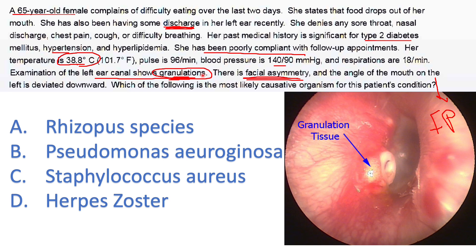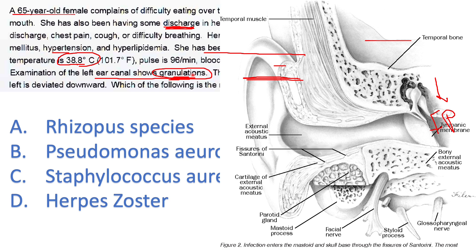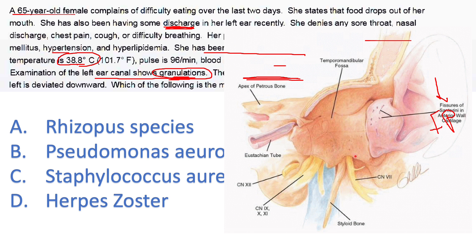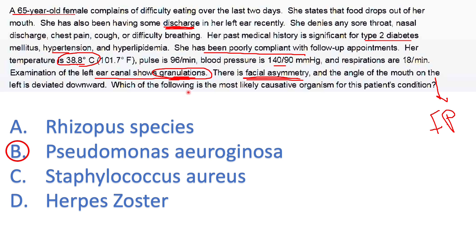Old, uncontrolled diabetics are susceptible to malignant otitis externa caused by Pseudomonas. The characteristic feature mentioned in the last two lines is the granulations — this is only seen with malignant otitis externa. We call it malignant because it is invasive: it crosses bone, which is why it can paralyze the facial nerve. There are fissures of Santorini in the cartilage of the external canal, and this is how Pseudomonas extends all the way down to paralyze the facial nerve and other cranial nerves.